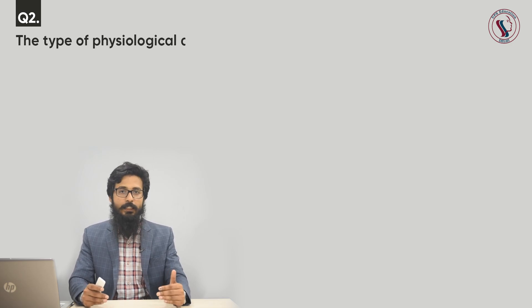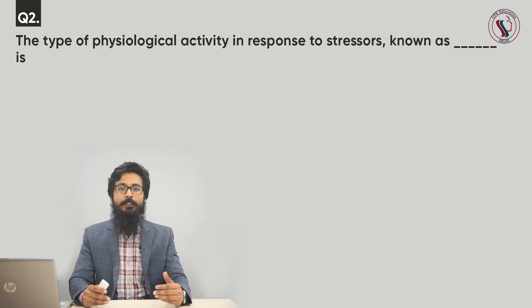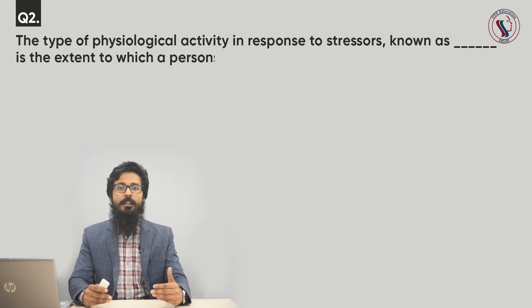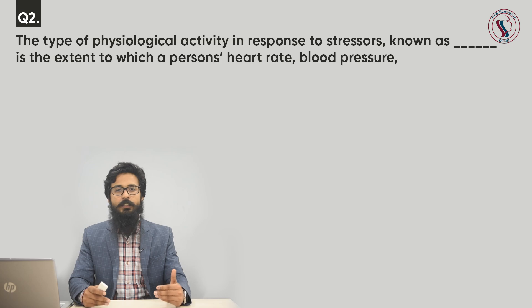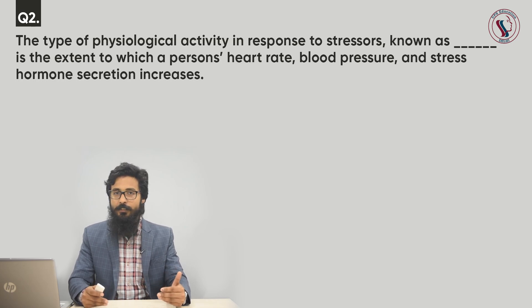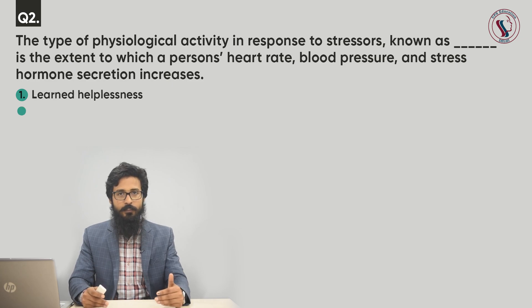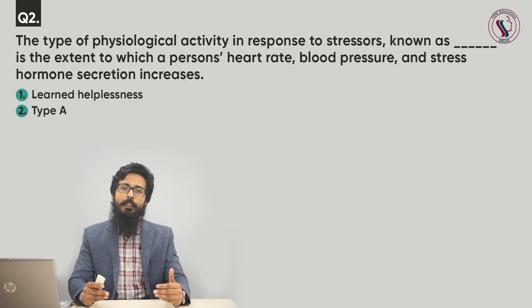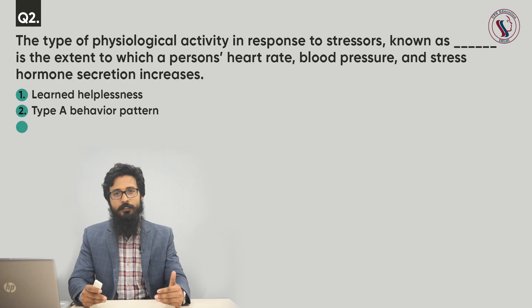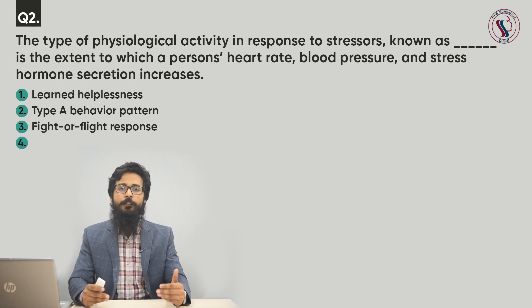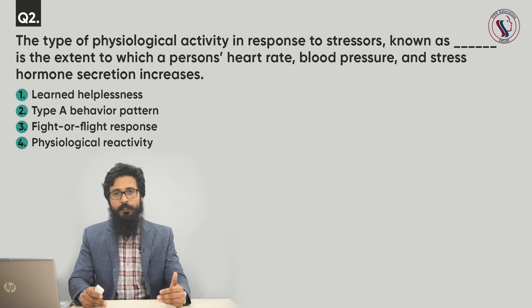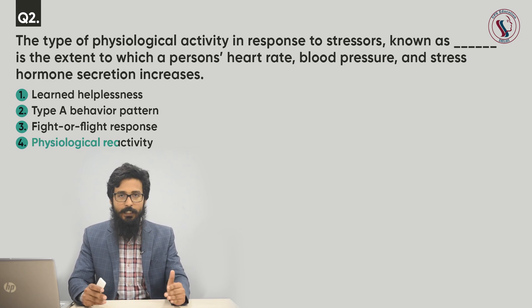Question number two. The type of physiological activity in a person in response to a stressor — fill in the blank — is the extent to which a person's heart rate, blood pressure, and stress hormone secretion increases. Options: first, learned helplessness; second, type A behavior pattern; third, fight or flight response; fourth, physiological reactivity. The correct answer is physiological reactivity.